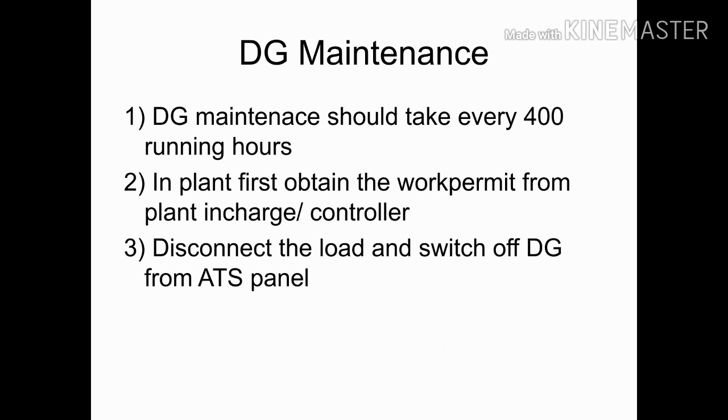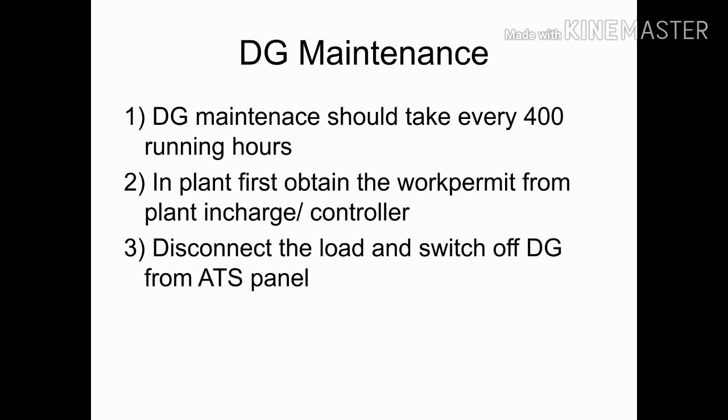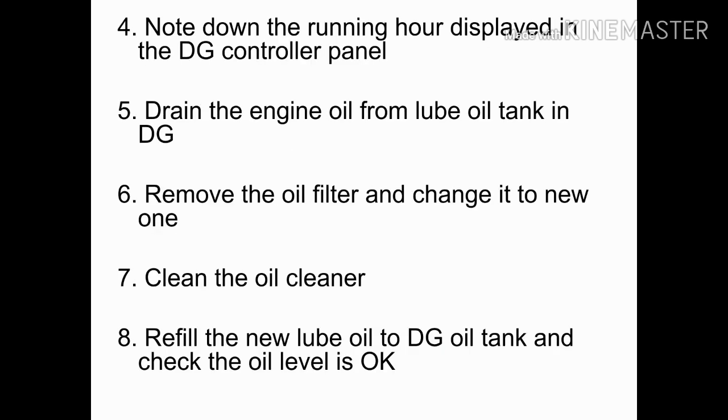After obtaining the work permit, disconnect the load from the diesel generator and switch off the diesel generator from the ATS panel. In most plants, the diesel generator is controlled by the ATS panel — ATS stands for Automatic Transfer Switch. Before starting maintenance, note down the last running hours displayed on the DG controller panel.